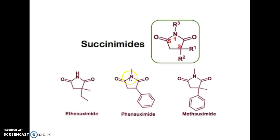For phensuximide, at position 1, instead of NH, there is an N-methylated group, and at position 3, the methyl and ethyl groups have been replaced with hydrogen and a phenyl group.